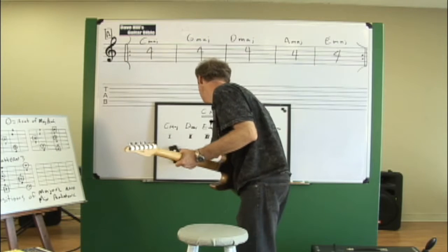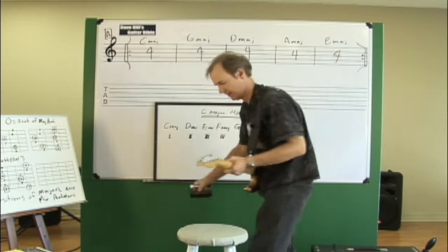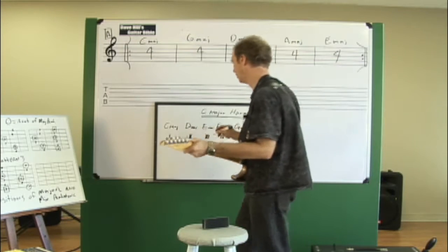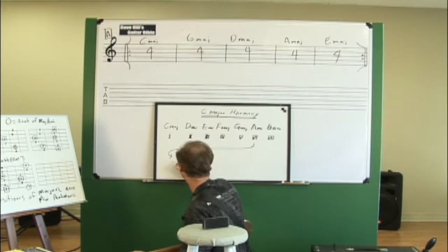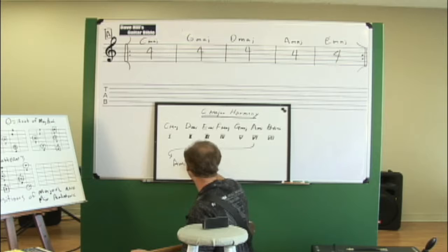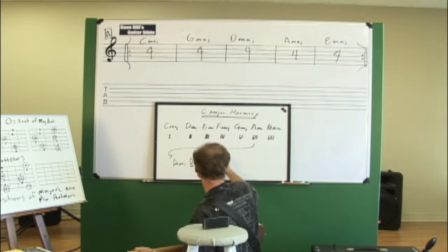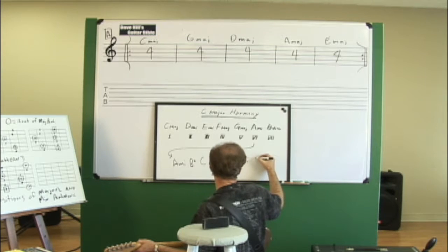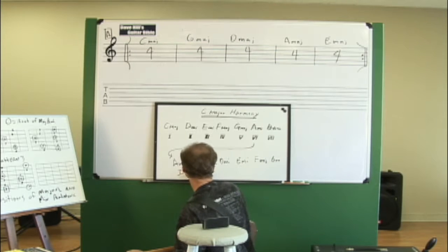The concept I'm explaining today is the idea of a relative minor. In every major key there is an internal minor key that exists at the same time — it's called the relative minor. The relative minor uses the same chords as C major. In this case, A minor is the one chord, this would be the two chord, C major would be the three chord, D minor the four chord, E minor the five, F major the six, and G major the seven.